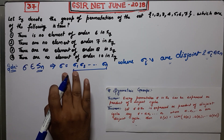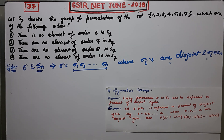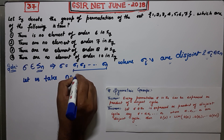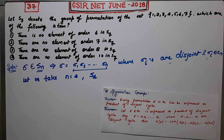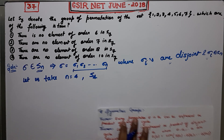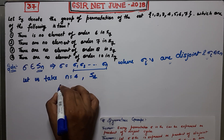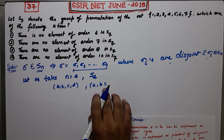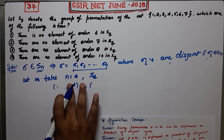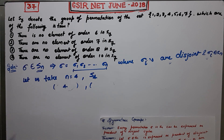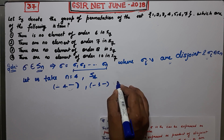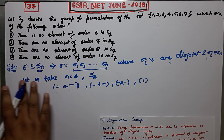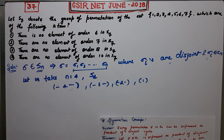Let's take n = 4, the symmetric group on 4 symbols. In S4, the possible cycle lengths are: a 4-length cycle, a 3-length cycle, a 2-length cycle, and a 1-length cycle. Any permutation in Sn can be expressed as a product of disjoint cycles, so how many disjoint products are possible from these cycle lengths?